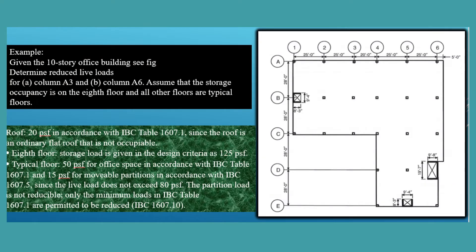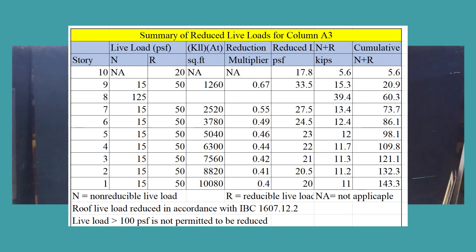Let's go over an example. We have a 10-story building with a roof pitch of one-half inch per foot. We want to find the reduced live load on column A3. Because the roof is essentially flat, we use 20 pounds per square foot per IBC Table 1607. The 8th floor is a storage floor with a design criterion of 125 pounds per square foot, and a typical floor is 50 pounds per square foot. I've set this up in an Excel spreadsheet — you should make one too because with 10 floors there are a lot of numbers to crunch.